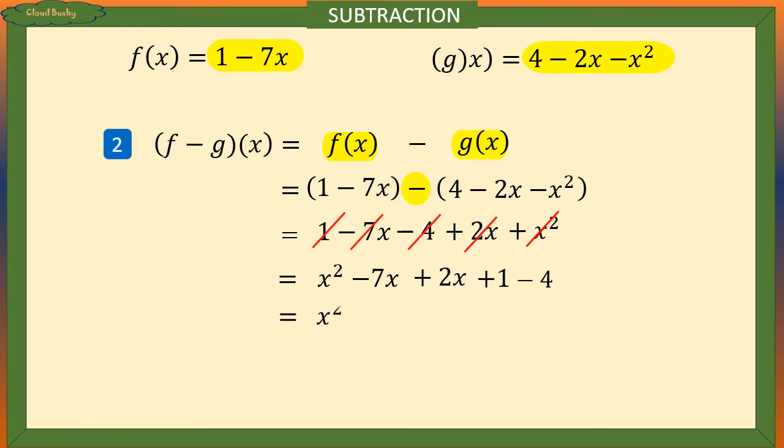So we have x squared minus 7x plus 2x is minus 5x plus 1 minus 4 is equal to negative 3. That's our answer x squared minus 5x minus 3.